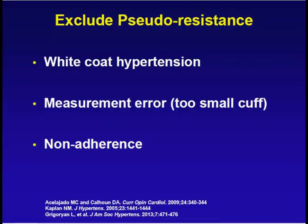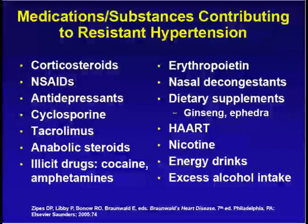Before diagnosing a person as having resistant or therapy-resistant hypertension, it is very important to exclude certain conditions known as pseudo-resistance. This may include white-coat hypertension, which can be excluded by ambulatory blood pressure monitoring. There could be a measurement error at the level of the physician, and there could be non-adherence to therapies, which also needs to be checked.